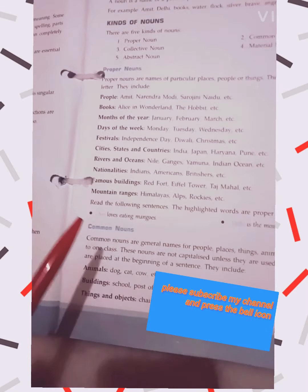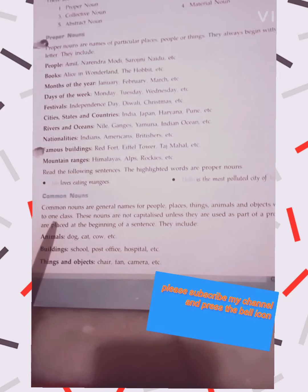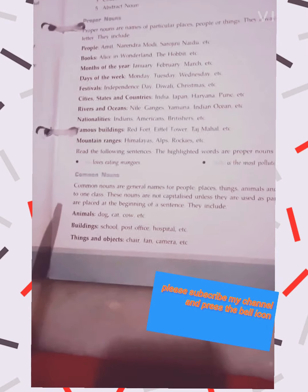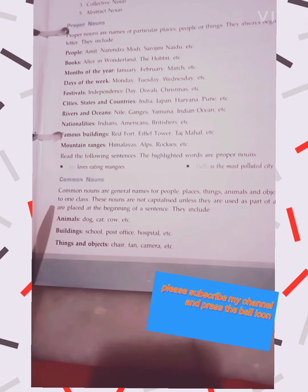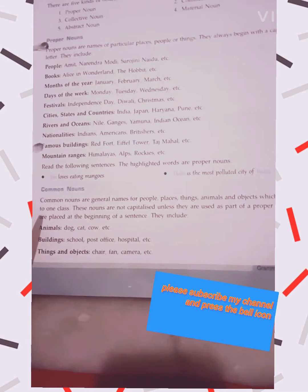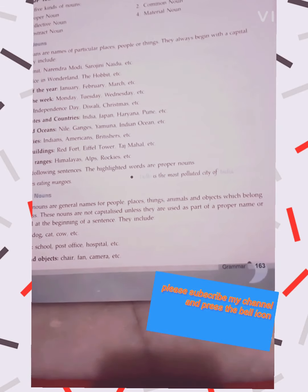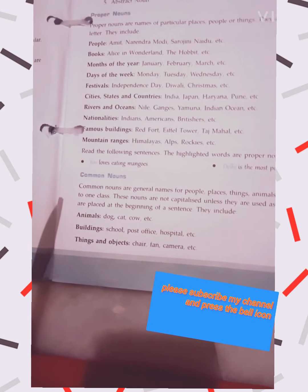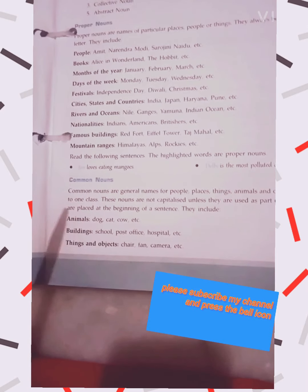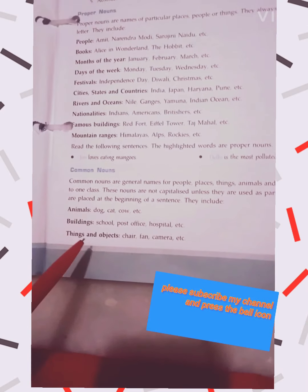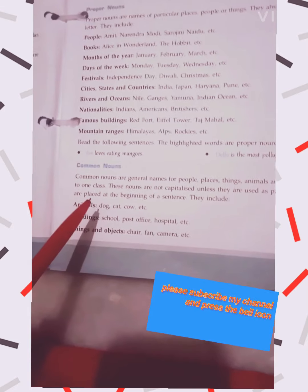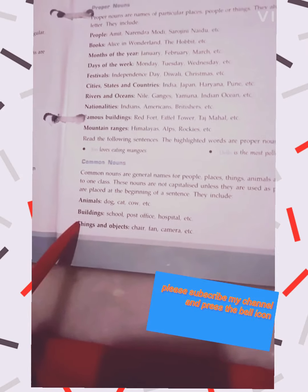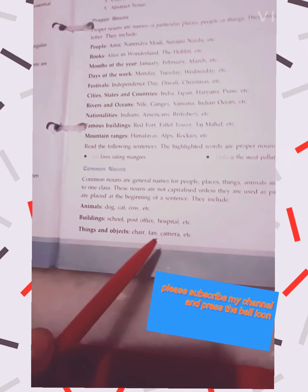Common Noun is a general name of a person, place, things, animals and objects which belong to one class. These nouns are not capitalized unless they are part of a proper name or placed at the beginning of a sentence. They include: Animals — dog, cat, cow, etc. Buildings — school, post office, hospital, etc. Things and objects — chair, fan, camera, etc.